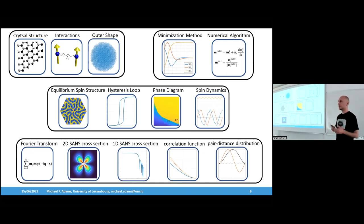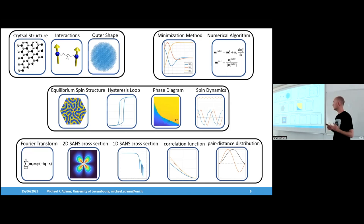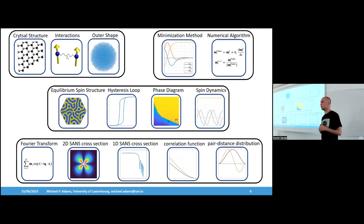When you have defined your material configuration, the next step is to decide which numerical methods are best suited to calculate the spin structures — typically the spin structures that minimize the magnetic energy. You can simulate this material for different applied fields, simulate hysteresis loops, or calculate phase diagrams where you include temperature or vary material parameters to map out, for example, skyrmion phases.